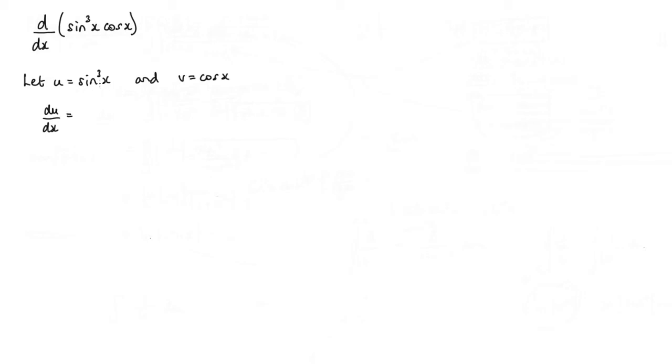Sin³x I could write as (sinx)³. To differentiate this, we would differentiate this bit here so we get 3sin²x, but then I need to multiply by the differential of this, which is cosx. So here I have 3sin²x·cosx.